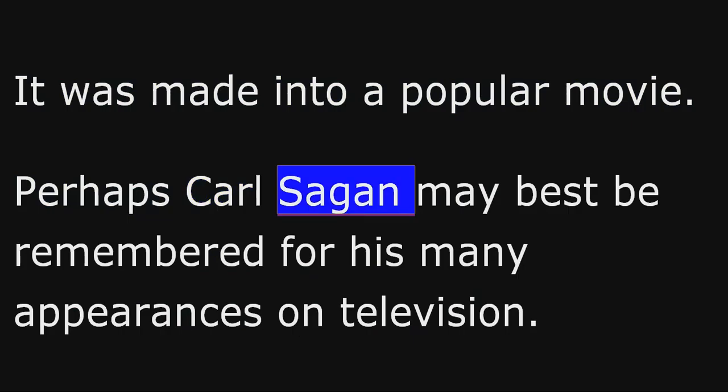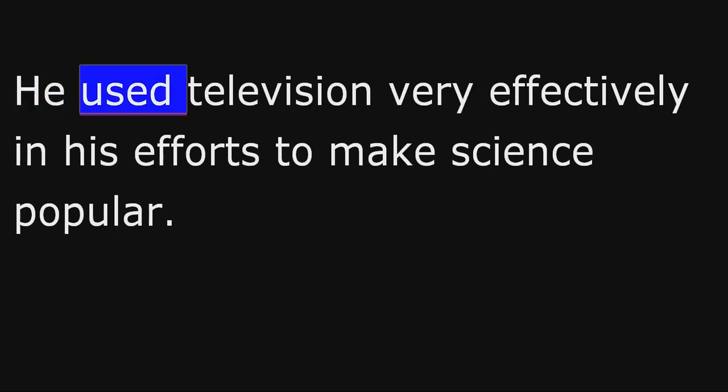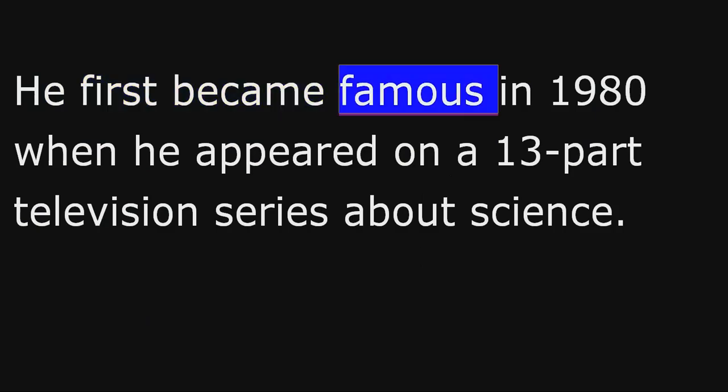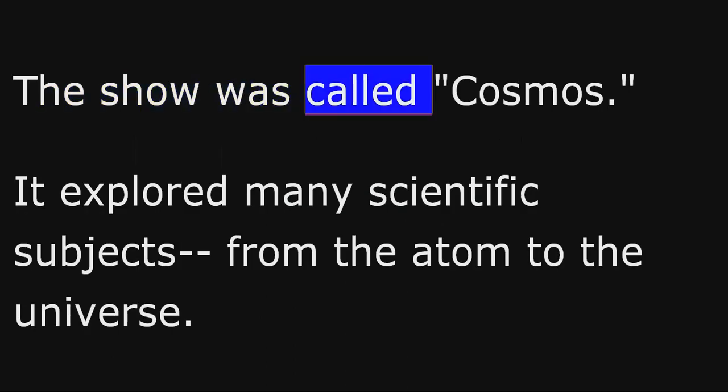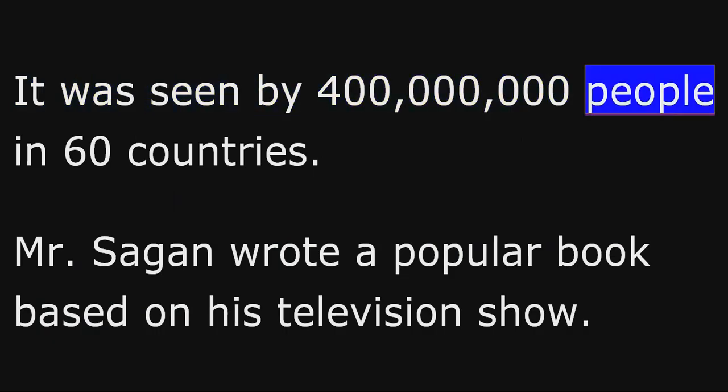Perhaps Carl Sagan may best be remembered for his many appearances on television. He used television very effectively in his efforts to make science popular. He first became famous in 1980 when he appeared on a 13-part television series about science. The show was called Cosmos. It explored many scientific subjects, from the atom to the universe. It was seen by 400 million people in 60 countries. Mr. Sagan wrote a popular book based on his television show.